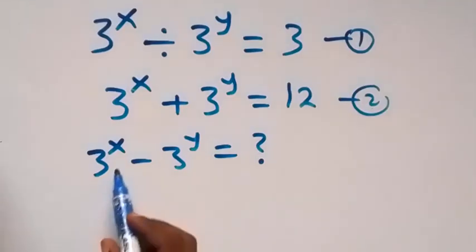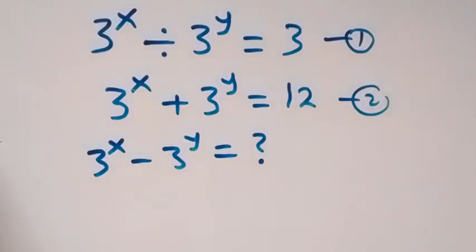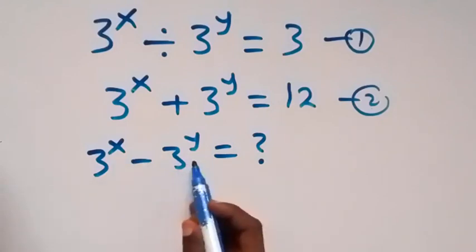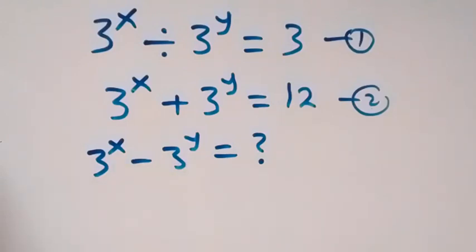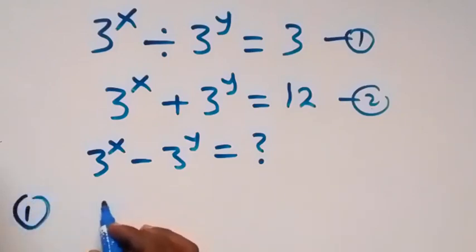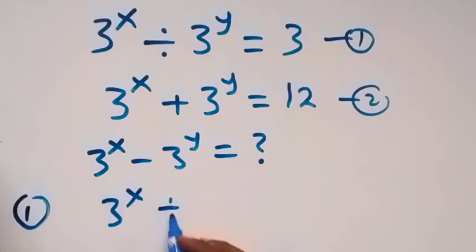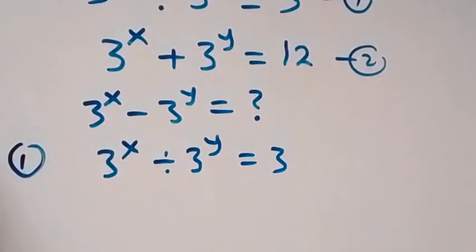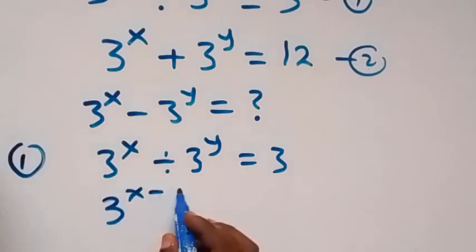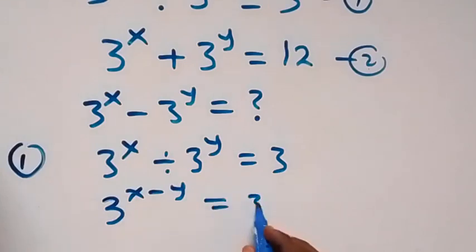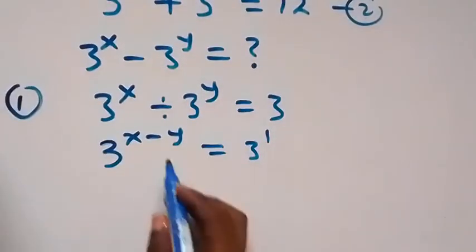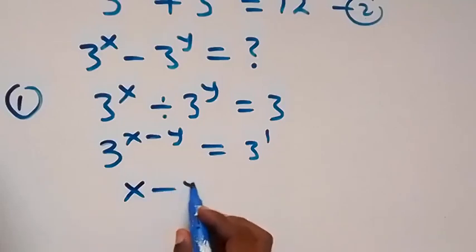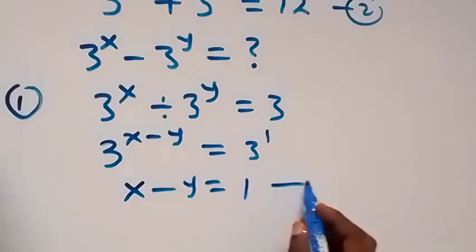We are interested in finding 3 raised to power x minus 3 raised to power y, so we need to find the values of x and y first. From equation 1, we have 3 raised to power x divided by 3 raised to power y equals 3. Applying the law of indices, since we are dividing with the same base, we can write 3 raised to power (x minus y) equals 3 raised to power 1. Since the bases are the same, the powers must be equal, so x minus y equals 1. We label this as equation 3.